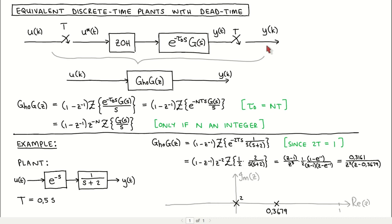We wish to find the discrete time transfer function g h o g of z that describes the same behavior from the discrete time input u of k to the discrete time output y of k as for the system with the continuous time plant.